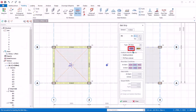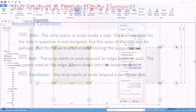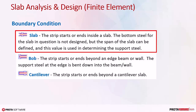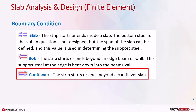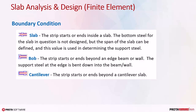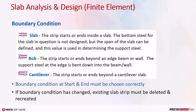Select span strip since we will be cutting the slab strip for the beam-slab model. For analysis results source, choose building analysis. This means we must choose to mesh the floor slabs during building analysis. FE floor analysis is the other option, which is a different analysis method that only considers one floor at a time. For boundary conditions: 'slab' means the strip starts and ends inside a slab; 'bending of bar' means the strip starts and ends beyond an edge beam or wall and the support steel at the end will bend down into the beam or wall; 'cantilever' means the strip starts or ends beyond a cantilever. Boundary condition at start and end must be chosen correctly, otherwise slab design will be erroneous. If boundary condition has changed due to a change in slab layout, the existing slab strip must be deleted and recreated.